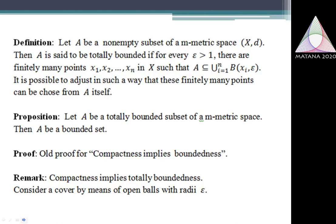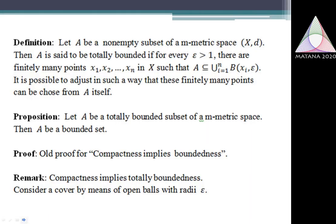Of course, the arguments are the same as for the proof that every compact subset is a bounded set, so I am not going to repeat it. One observation: compactness implies total boundedness. If I consider a compact subset of an M-Matrix Space, it should also be totally bounded. The proof is simple: consider the classical cover where A is contained in the union of B(x, epsilon) over all x in A. When A is compact, that cover has a finite subcover — that is precisely the condition for the definition of totally bounded. So every compact subset should be a totally bounded set; of course the converse need not be true.